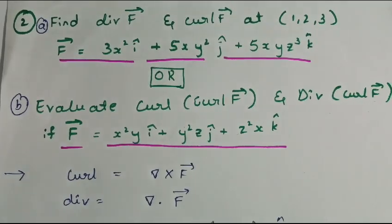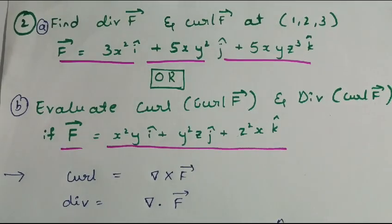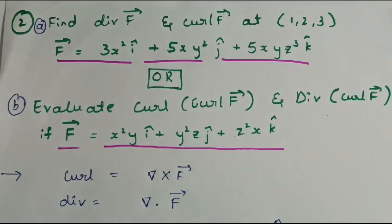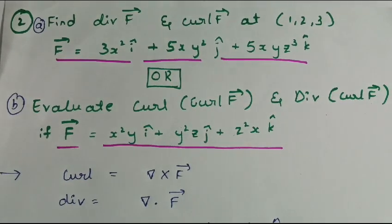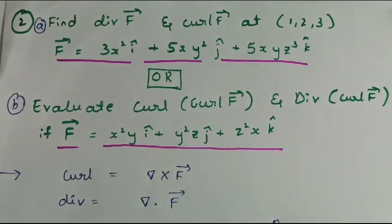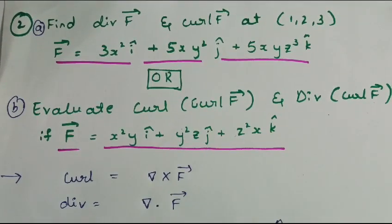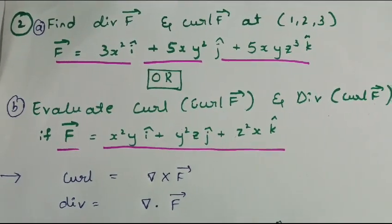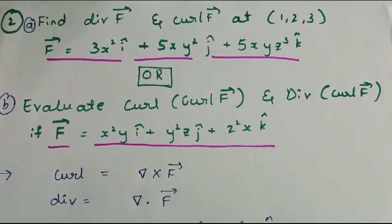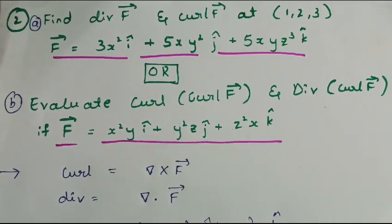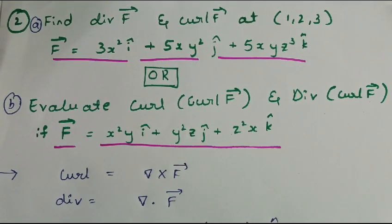The second question is based on divergence and curl. We need to find the divergence of a vector f at the point (1, 2, 3). The second type of question asks us to evaluate the curl of a vector f and the divergence of curl f. Now I am solving question 2b: evaluate curl of curl of vector f and divergence of curl of f.